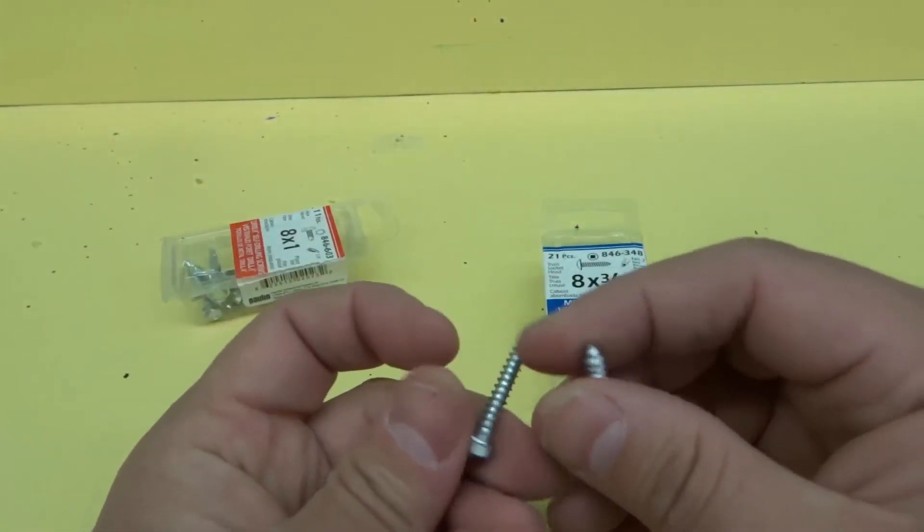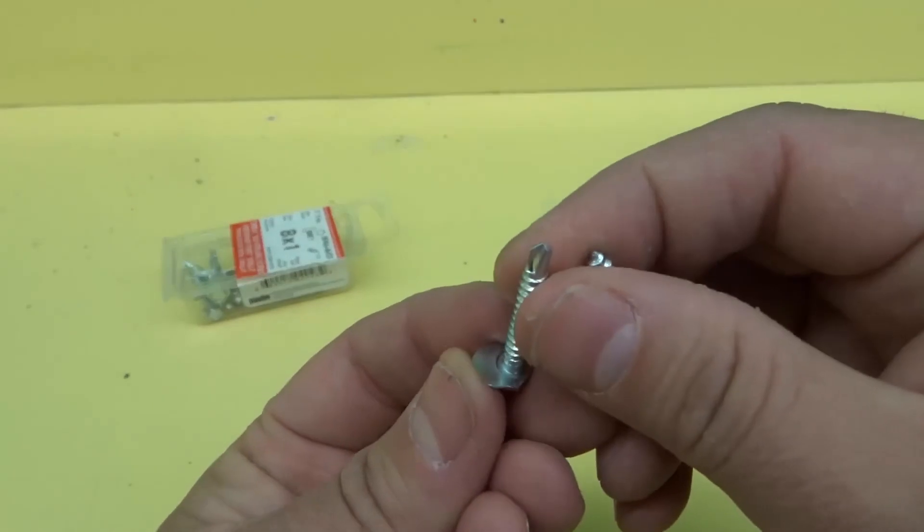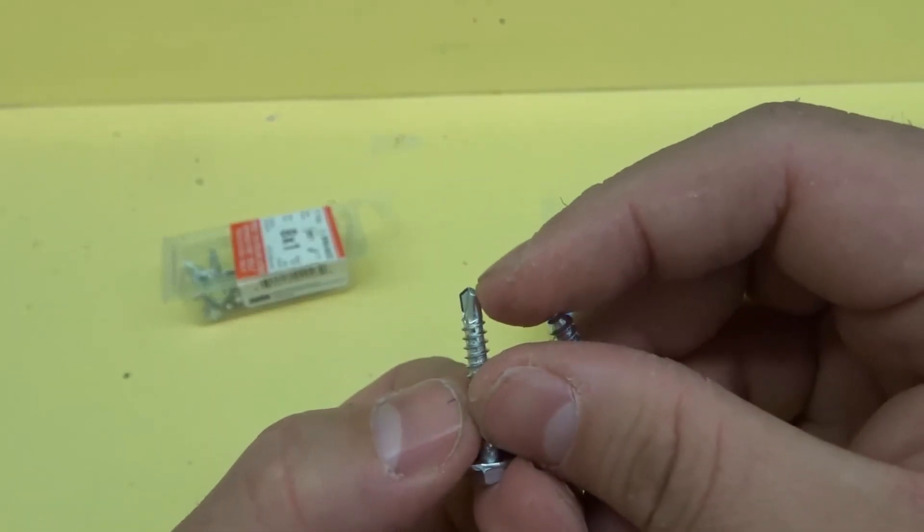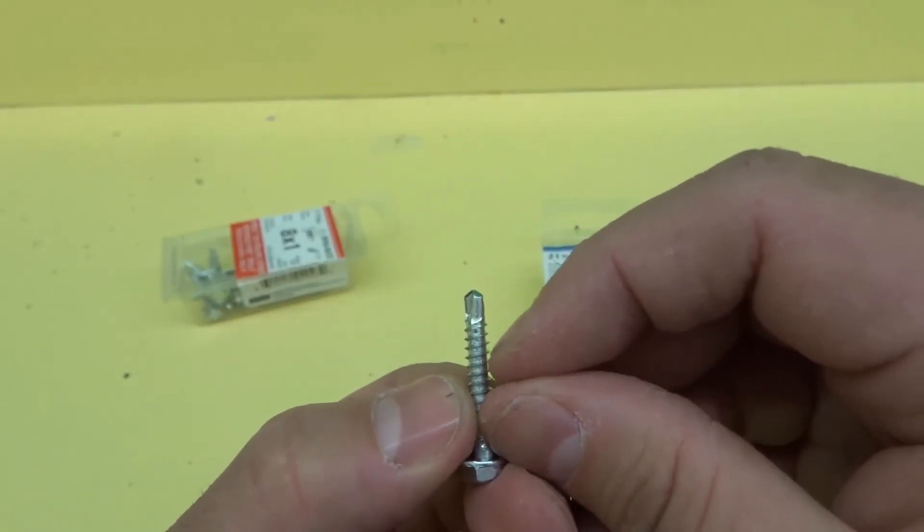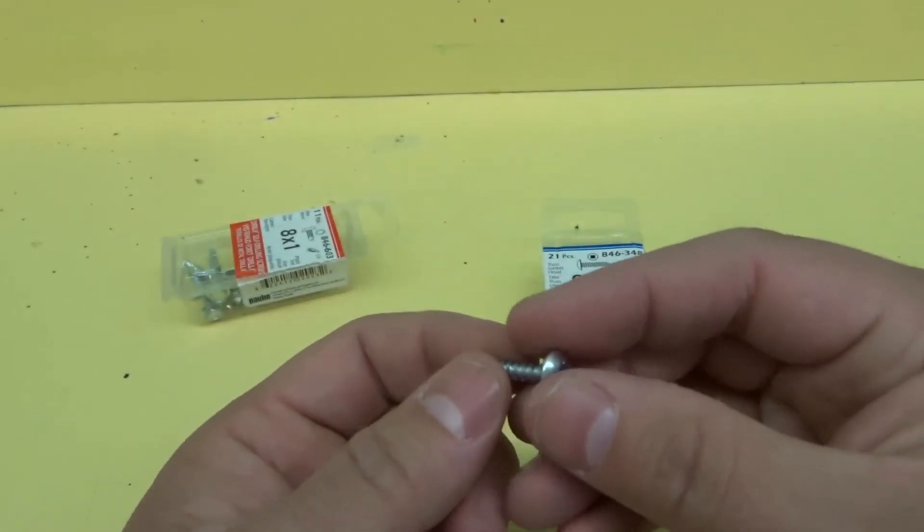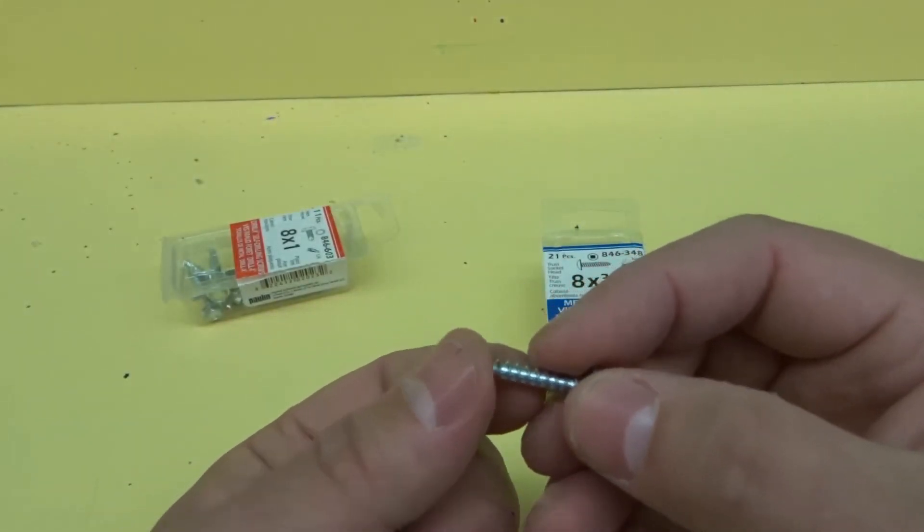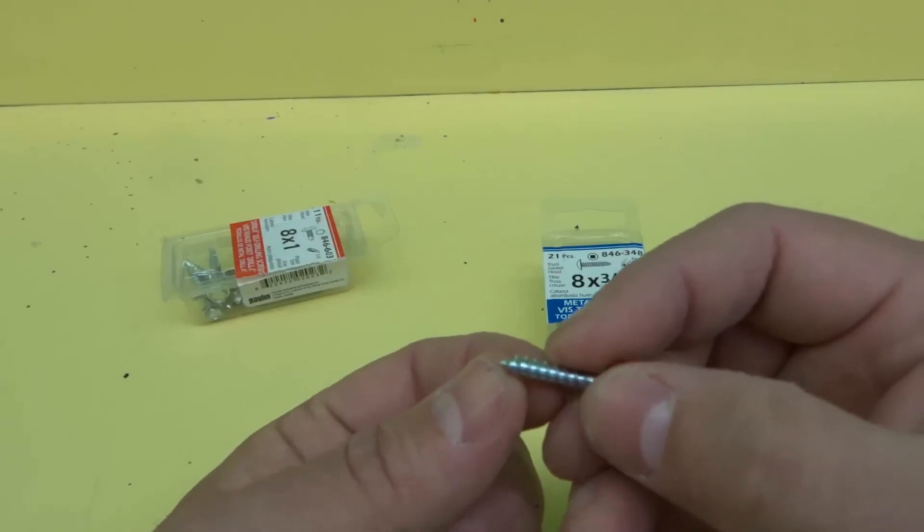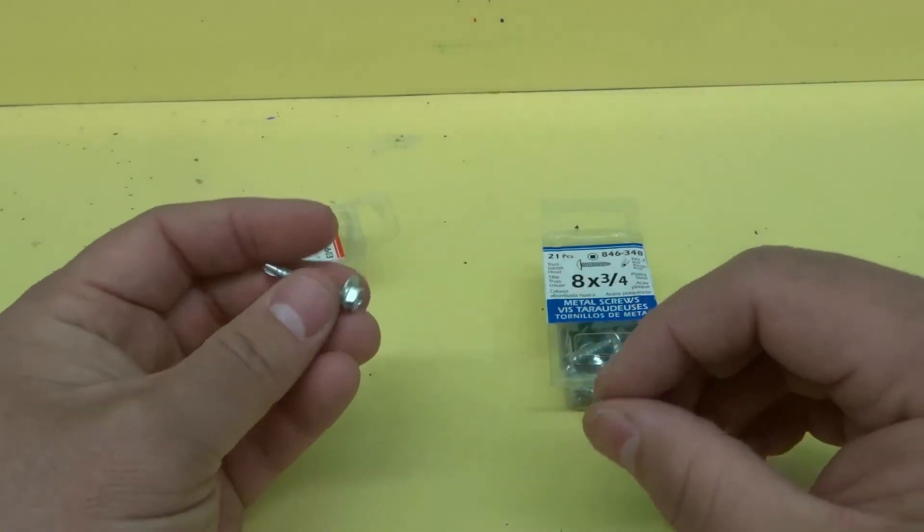The cool thing about the self-drilling screw is that it drills the right size pilot hole for its threads. Whereas for a self-tapping screw, you have to figure out what size pilot hole you need, drill it, then fasten the screw down.